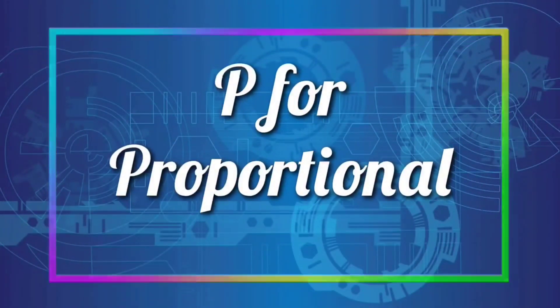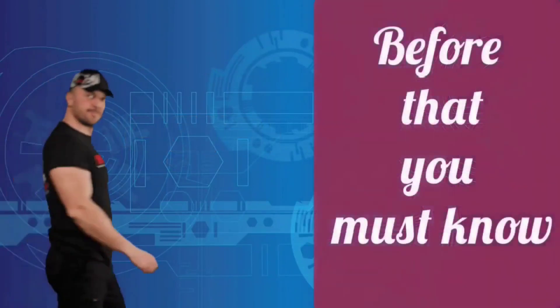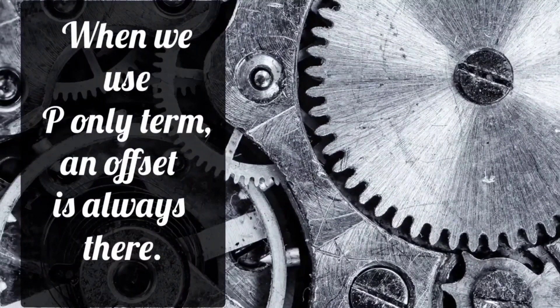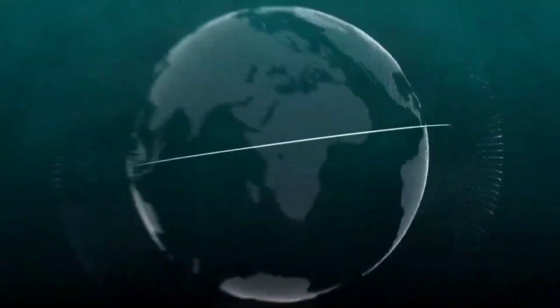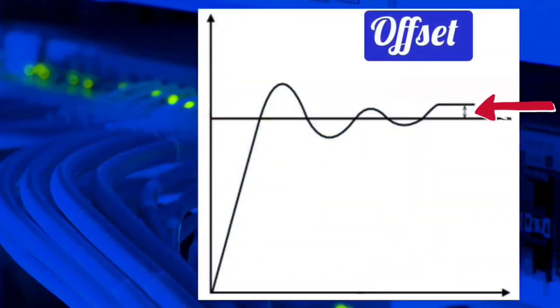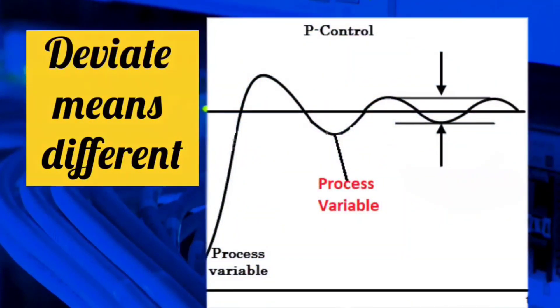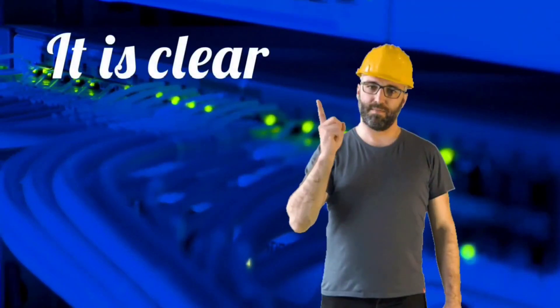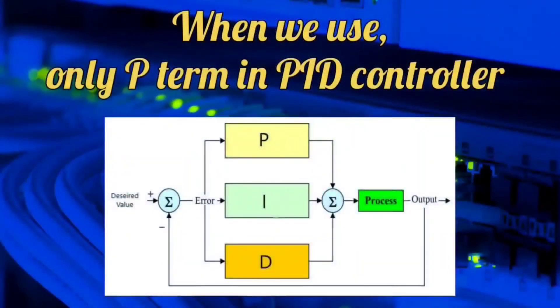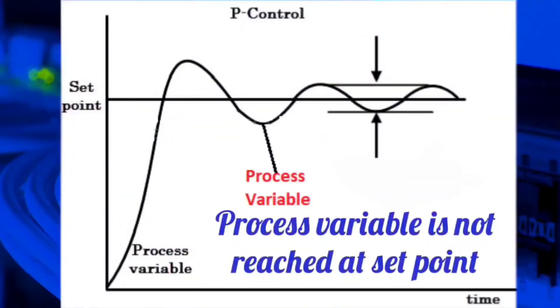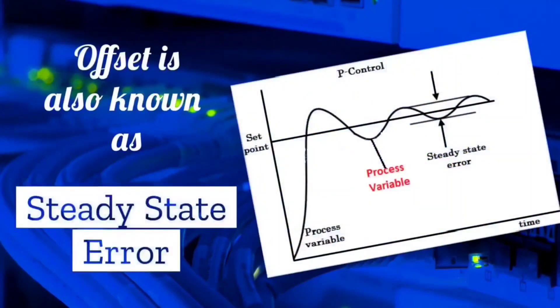P term is clear. Now let's see I for integral. You need to know what was missing in P, so that the I term had to be introduced. When we use only the P term in a PID controller, an offset is there. Offset means the process variable deviates from the set point, so offset is the error. When we use only the P term, an error remains and the process variable does not reach the set point. Offset is also called steady-state error.